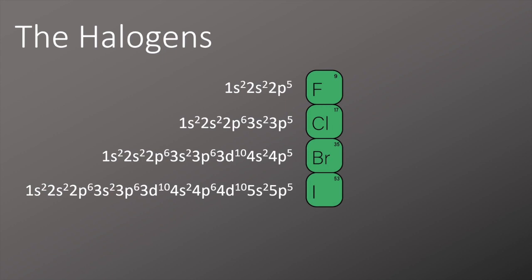For example, with fluorine it has 2s2 and 2p5, that's seven electrons all together in the two energy level. They all form diatomic molecules in their elemental form, and at room temperature fluorine is a pale yellow gas, chlorine is a green gas, bromine is a reddish brown liquid and iodine is a grey solid.